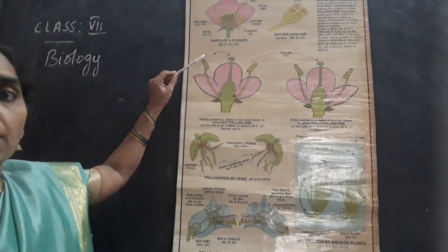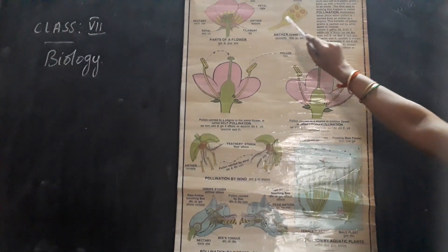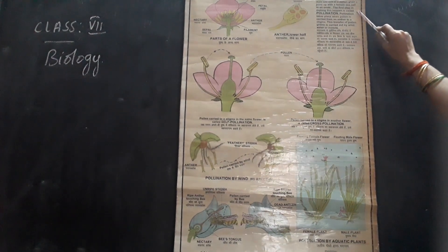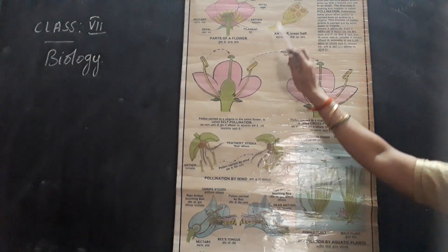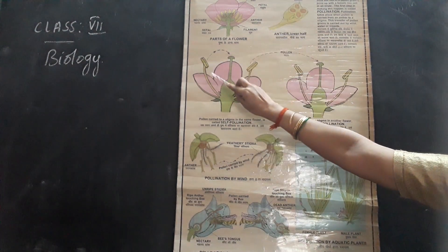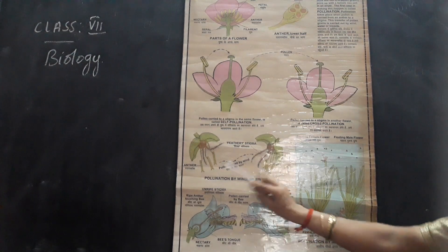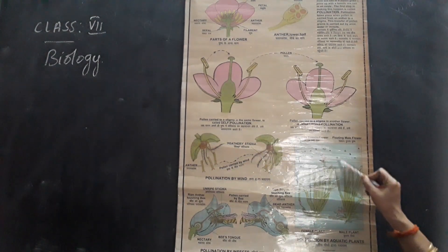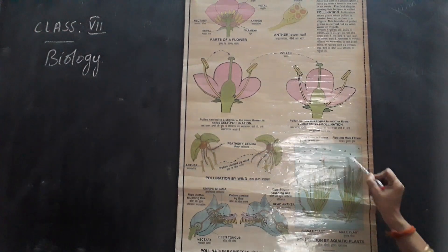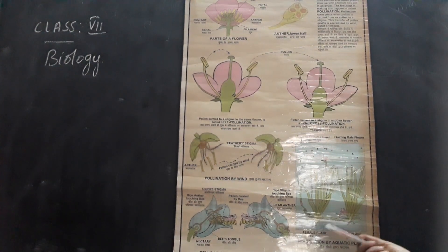This is about pollination. During pollination, a new seed begins when the male sex cell in the pollen grain joins with the female sex cell in an ovule. The first step in making this happen is called pollination. Pollination takes place when the pollen grain from the anther moves to the stigma. This transfer of pollen grains is carried out either by wind, water, insects, birds, or human beings.